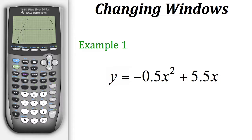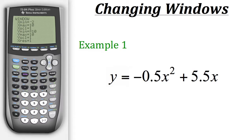We've gotten rid of some extra space in the second quadrant. We also have a lot of extra space in the fourth quadrant, so let's remove that too. We'll go to window — the fourth quadrant area corresponds to the negative side of the y-axis — so instead of y min being negative 10, let's raise it to negative 2 and graph that.